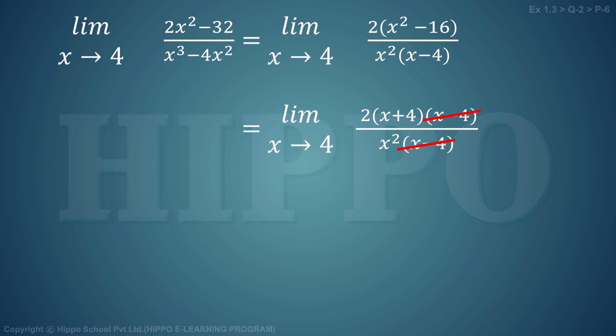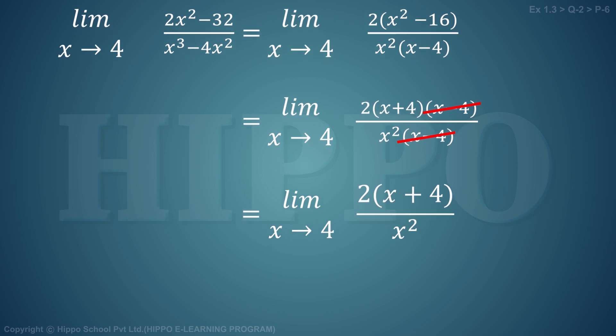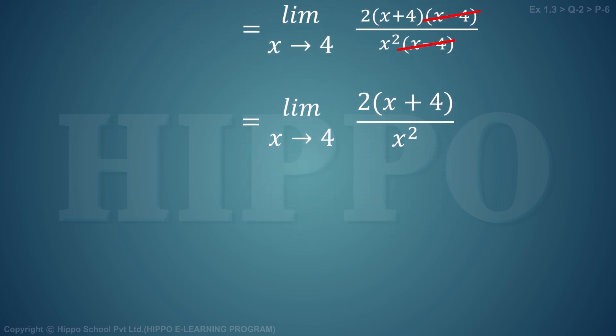We get 2 times (4 + 4) divided by 4², which gives us 2 times 8 divided by 16.